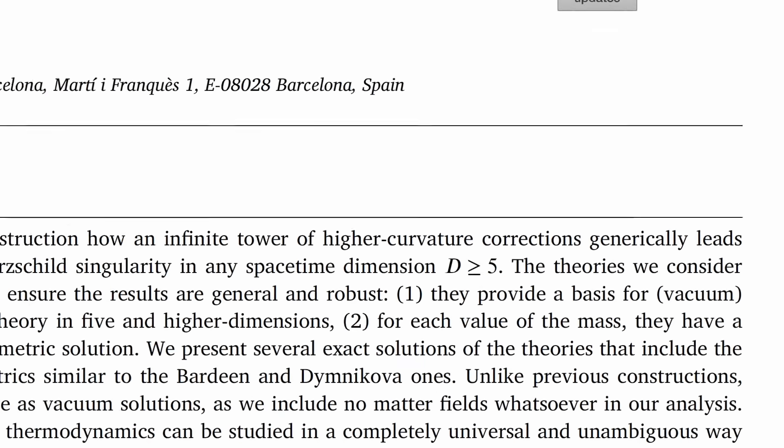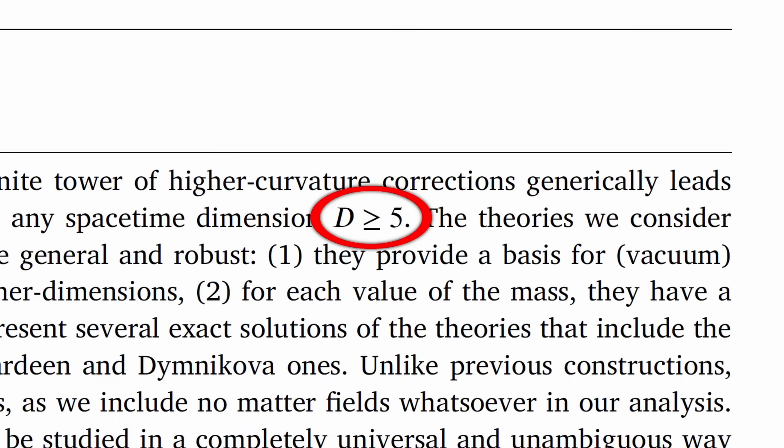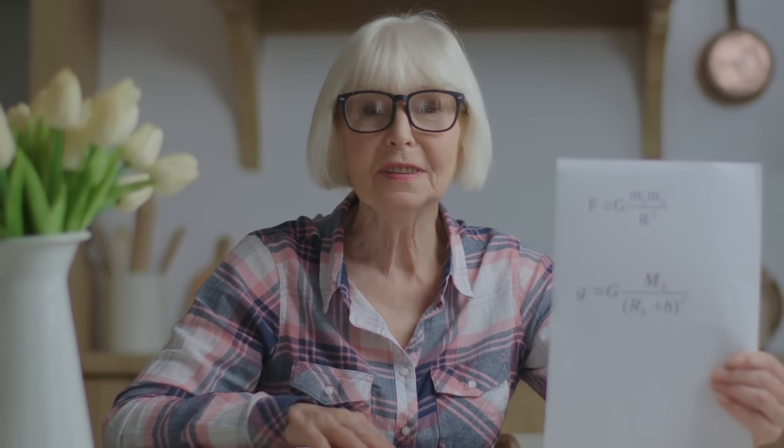Their solution only works in five dimensions or more, which is clearly stated in the paper but not so clearly in the press release. This is basically the physics equivalent of saying we have cured Alzheimer's in yeast. The other problem is that there are hundreds of different ways to do the same thing. Indeed, even I wrote a paper about how you can get rid of the black hole singularity by modifying the equations of general relativity, and so have lots of other people.